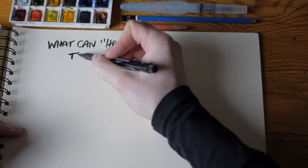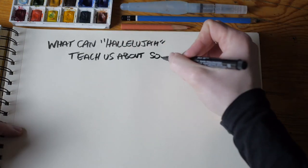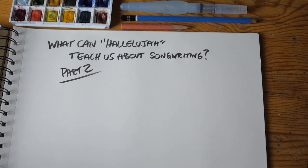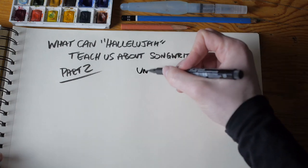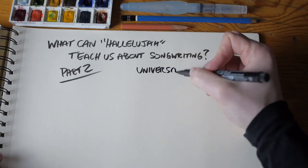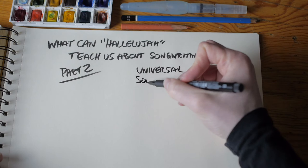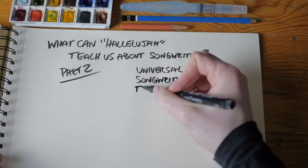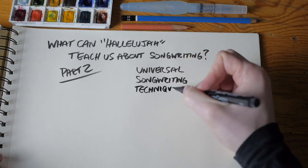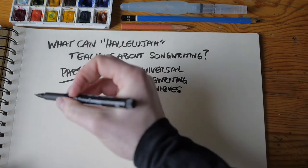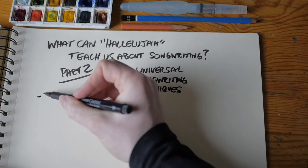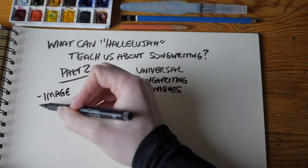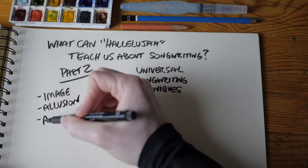Welcome to part two of What Can Hallelujah Teach Us About Songwriting? In part one, I discussed the song's first verse and chorus, and focused on illuminating the universal songwriting techniques of Leonard Cohen's masterpiece. In part two, I'll focus on the song's second verse and discuss its defining characteristics: image, allusion, and alliteration.